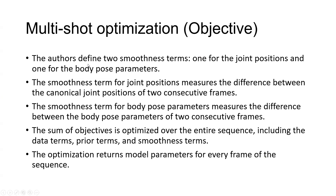For the optimization, they have the following objectives. They defined two smoothness terms: one for joint position and another for the pose parameters for SMPL. The smoothness term for joint position measures the difference between canonical joint points and the joint position of two consecutive frames. These two objectives are optimized through the whole sequence, and for each scene in the sequence, they return the model parameters — joint position and body pose parameters.